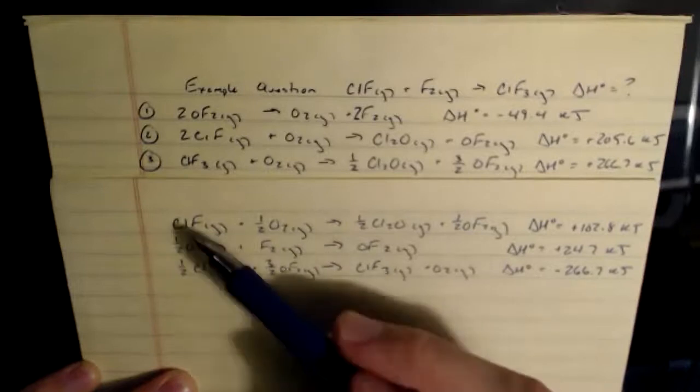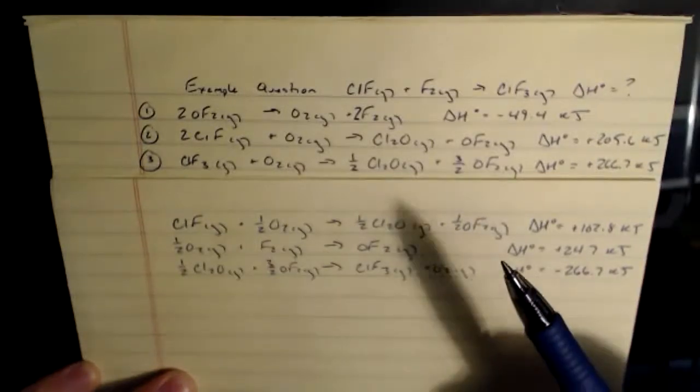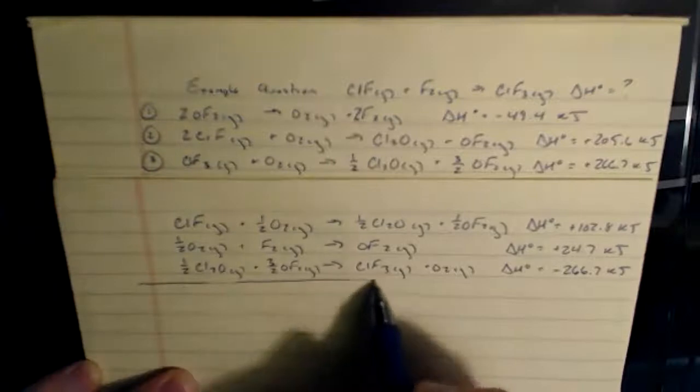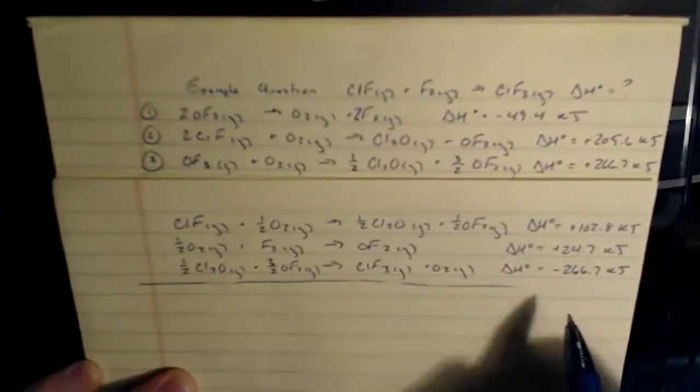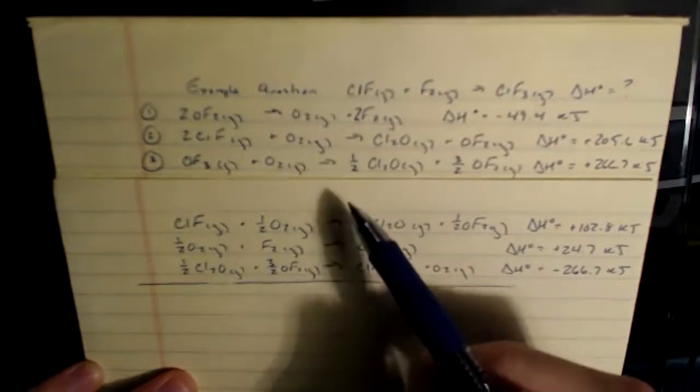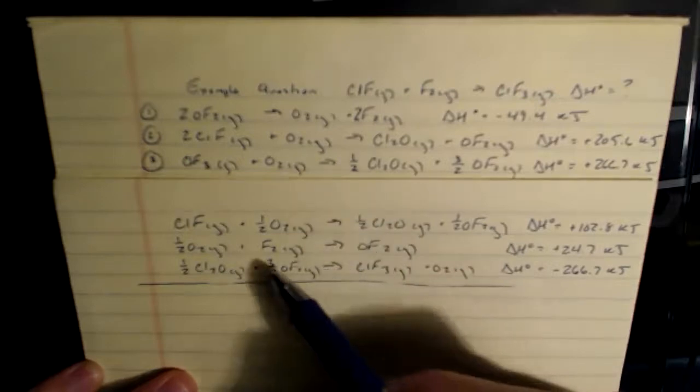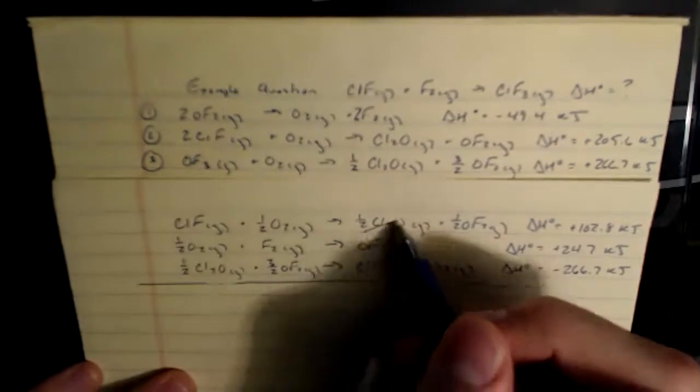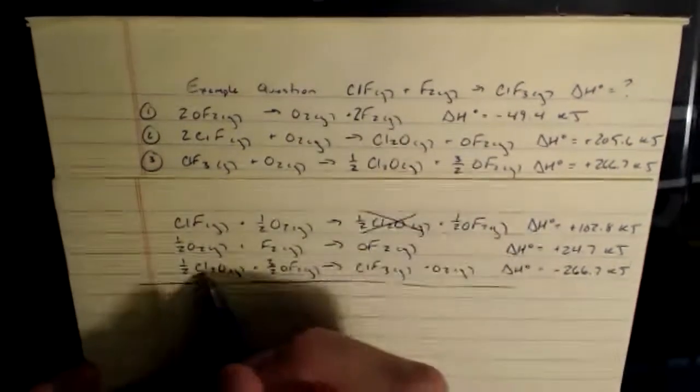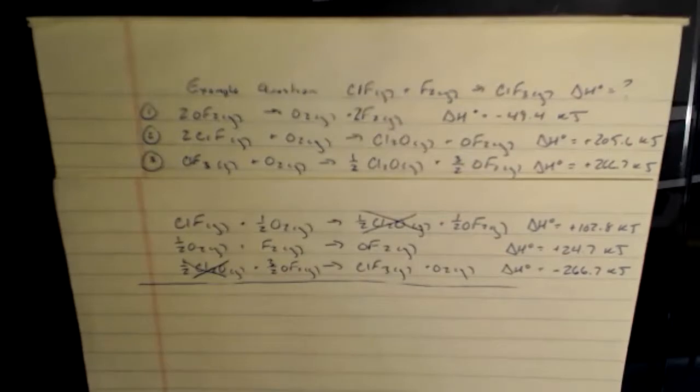So now I know I have everything where I want it, my ClF, my F2, my ClF3. Now let's simplify this reaction because I got some things added in here that I don't want in my final answer. If it appears on the left and the right side, I can simplify it down if it has the same identity and the same state. So let's see what meets that criteria. And this is why I try and line my arrows up when I rewrite my reactions because it makes it easier to compare reactants and products. So we see things like this, half a Cl2O reactant in a product, goes away completely.